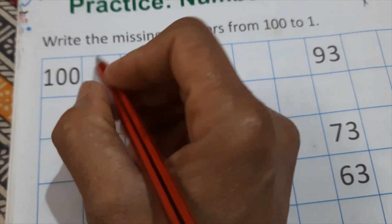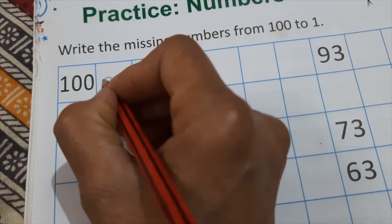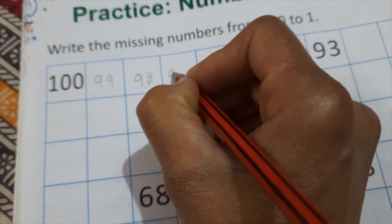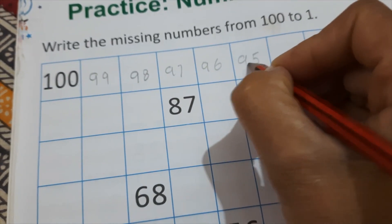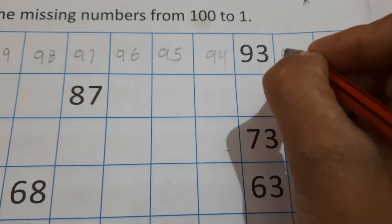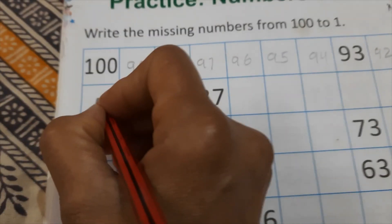100. Write the missing numbers from 100 to 1. 100, 99, 98, 97, 96, 95, 94, 93 is already right. 92, 91, 90.